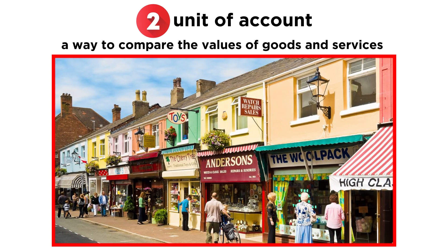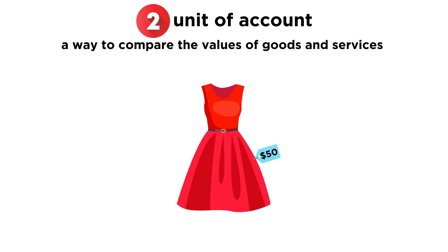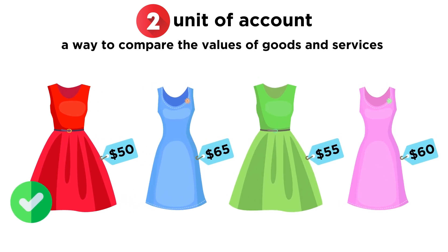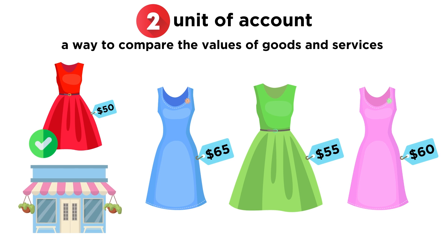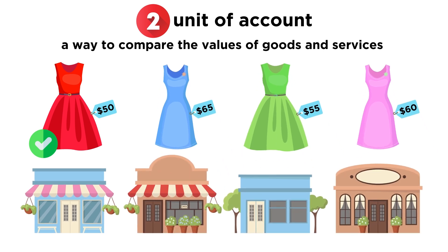Money also serves as a unit of account. This means it provides a way to compare the values of goods and services. For example, say you see a dress on sale for $50. You know this is a good price because you've checked the price of similar dresses in other stores. You can compare the cost of the dress in this store with others because the price is expressed in the same way everywhere.